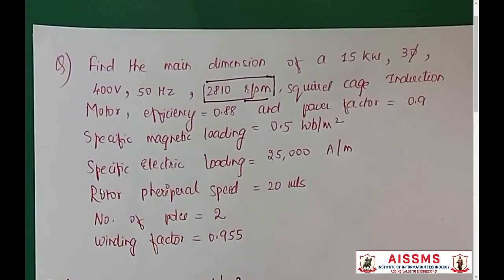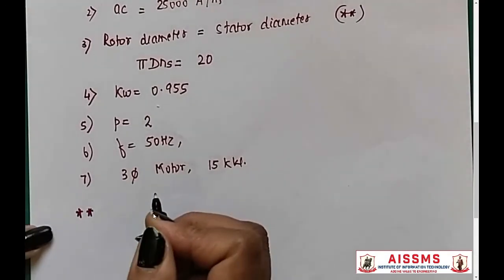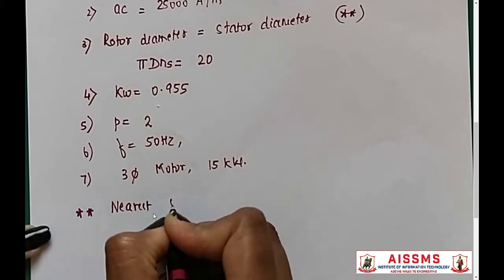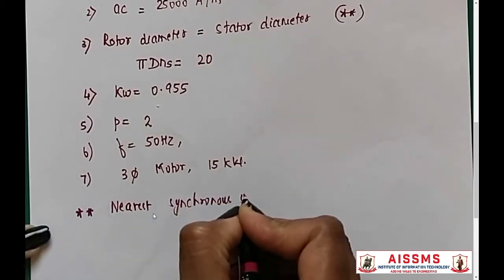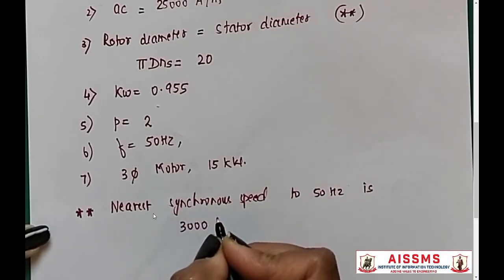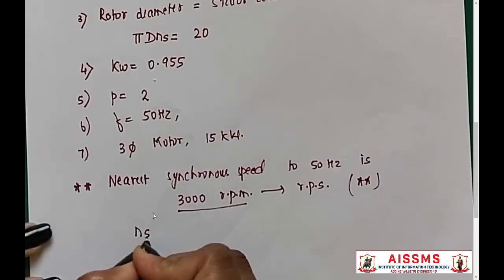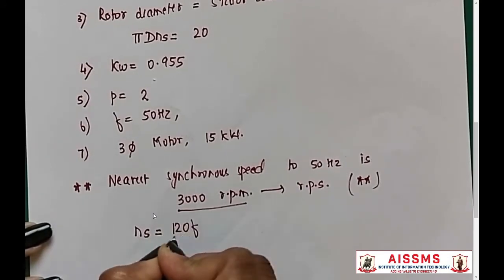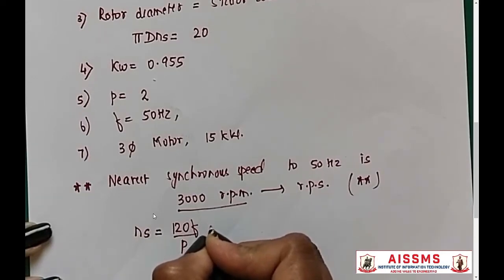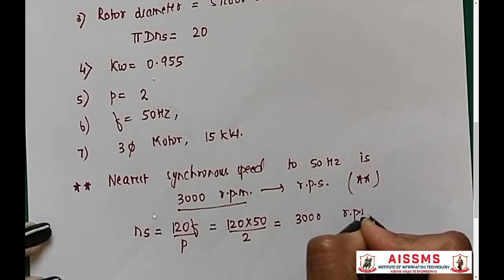This is a point of concern. We have to note here that we have to assume the nearest synchronous speed to the given value. For 50 hertz, the nearest synchronous speed is 3000 RPM. We are converting this to RPS, revolutions per second, which you have to always remember. This is very important. NS equals 120F upon P, so 120 times 50 divided by 2 will give me 3000, which is the nearest synchronous speed.